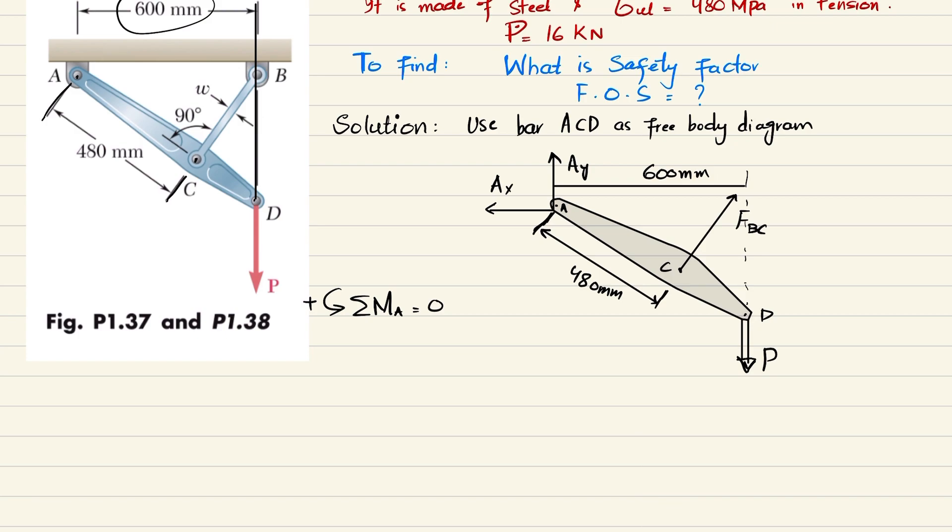I will write 480 into FBC minus P into 600 equals zero. When you calculate it, you get 480 FBC equals 600P, so FBC equals 600P divided by 480.